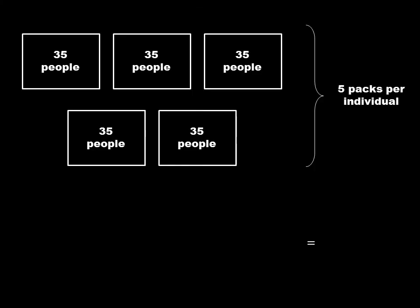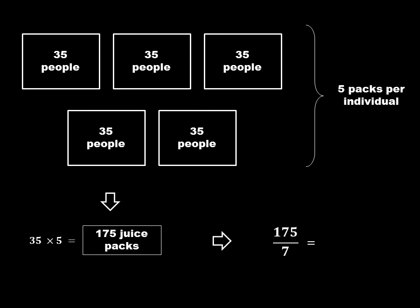This is a visual representation of the problem. 35 times 5 is equal to 175 juice packs. 175 juice packs divided by 7, which is the number of boxes that will be needed for the party.